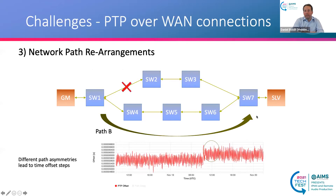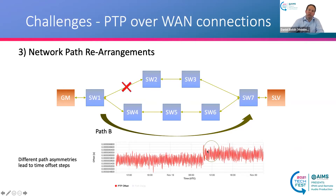What is actually seen on the other side when you compare the incoming PTP traffic to a reference like GPS? At the moment the path rearrangement occurs, the different path asymmetries lead to an offset step that you can see on the slave — your slave will jump by a certain amount. You have to deal with this when transporting PTP over WAN.